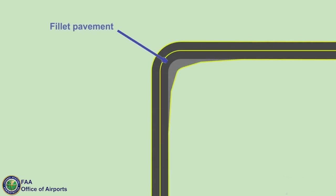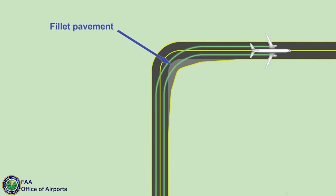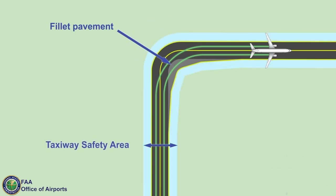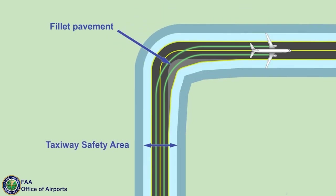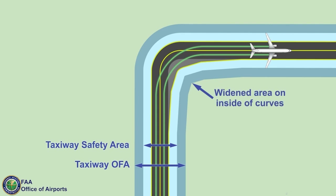For taxiway curves, additional fill of pavement is necessary on the inside of the curve since aircraft gear tracks to the inside of the taxiway centerline when turning. Because of this additional fill of pavement, the taxiway safety area and taxiway OFA extend further from the taxiway centerline on the inside of the curve to maintain the standard taxiway safety area and taxiway OFA widths.